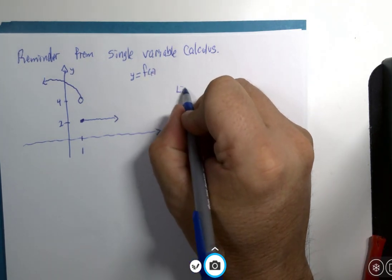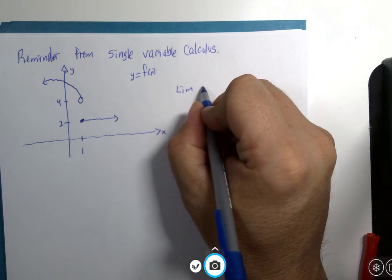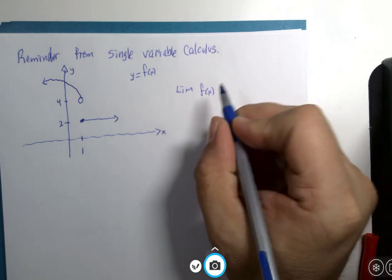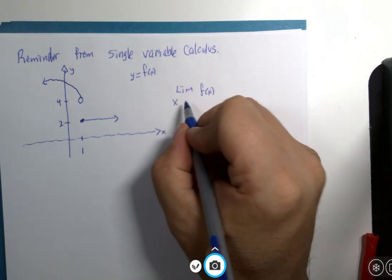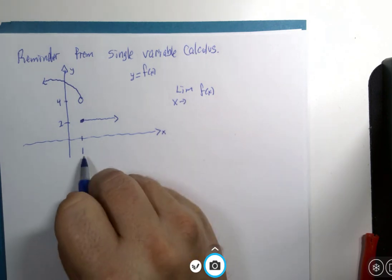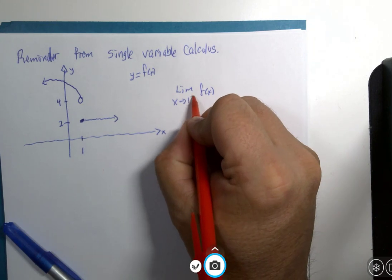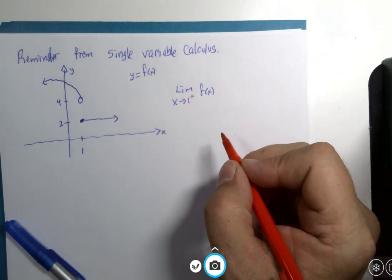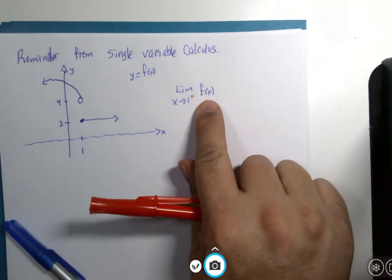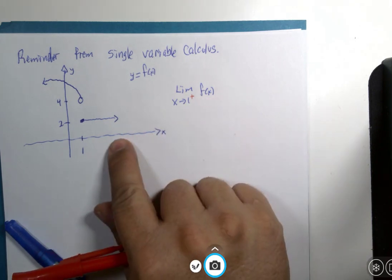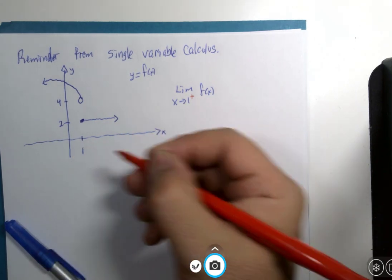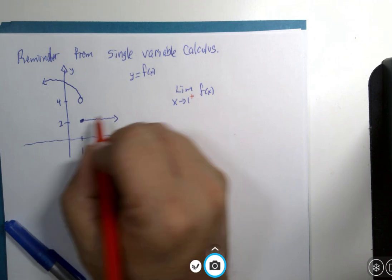So if I were to calculate this limit of this function as x approaches 1 from the right-hand side, the question is, what's the y value when you approach this x value from this direction? Well, that y value is 2.